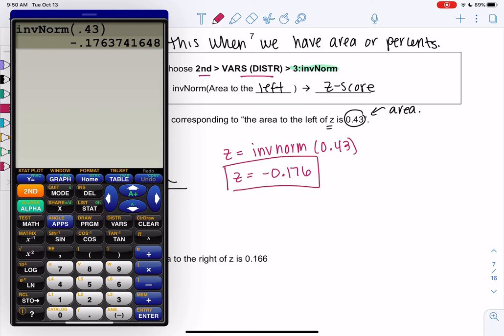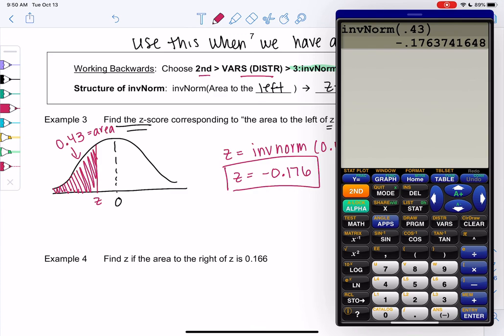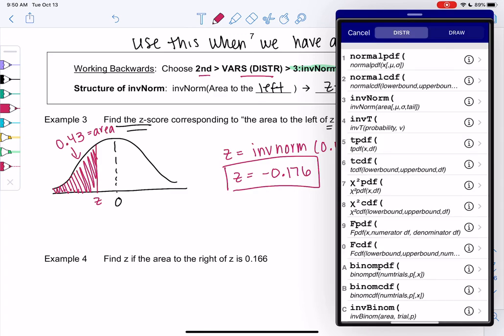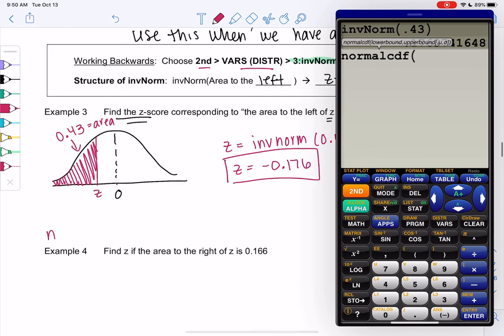And if you wanted to check this, this is actually the same as doing... So second distribution, normal CDF, if we did the reverse. So negative infinity. So negative 10 to the 99 up to this z-score should output the area of 0.43.